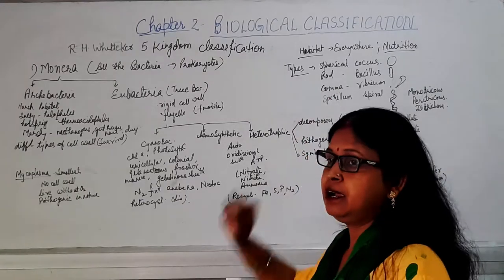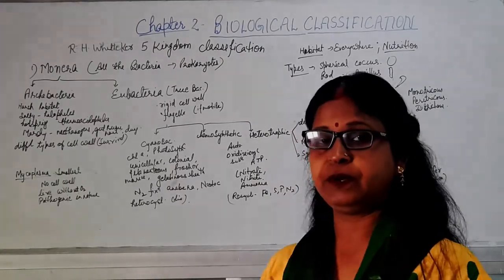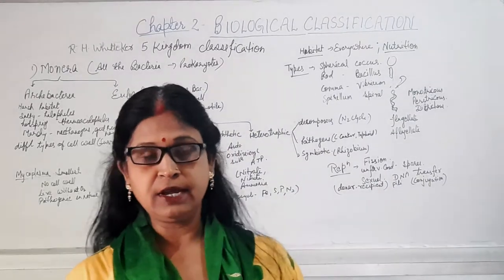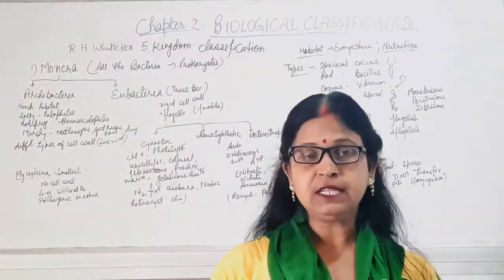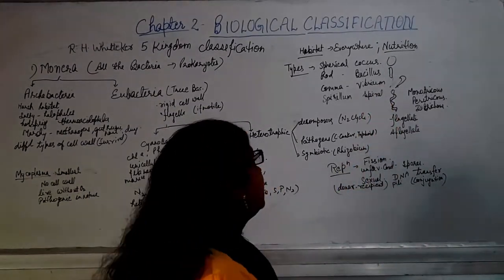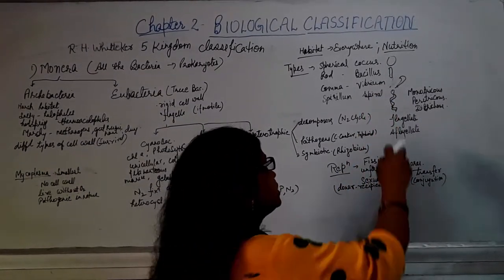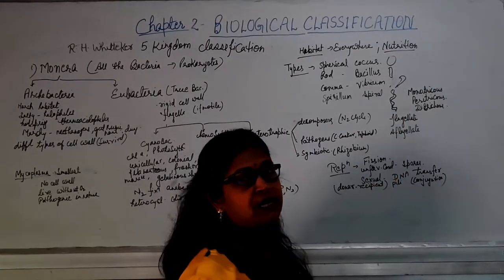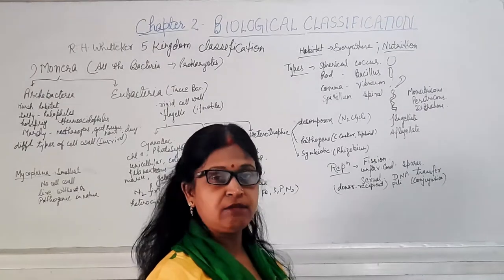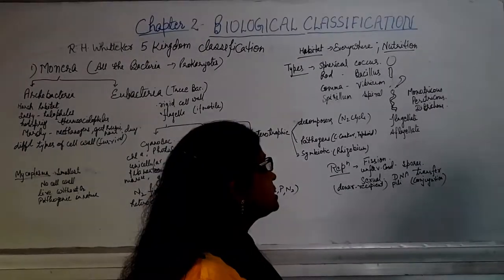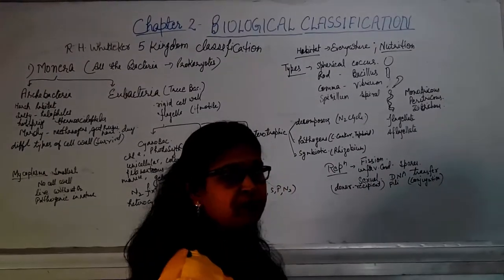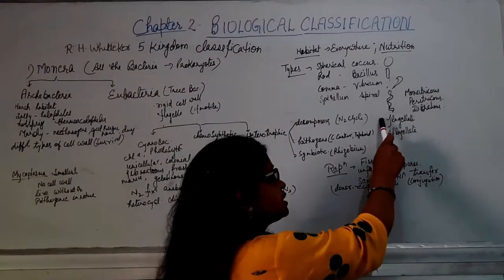Depending upon their shape, there are four types of bacteria. When they are spherical or circular in shape, they are known as coccus (plural: cocci). When they are rod-shaped, the name is bacillus (plural: bacilli). Comma shape is known as vibrio, and spring-like spiral shape is known as spirillum.